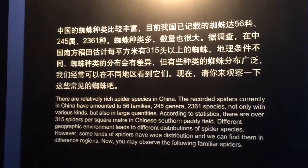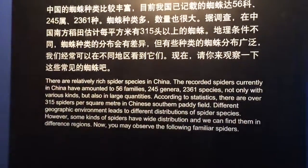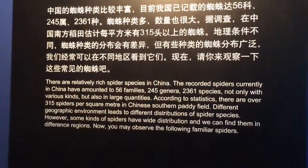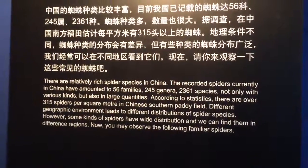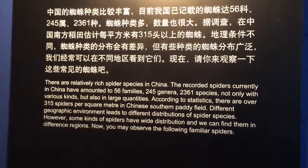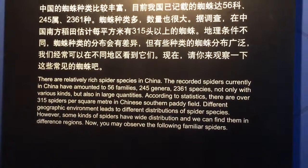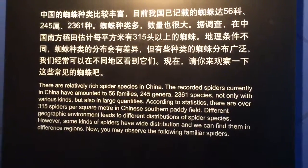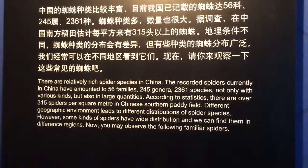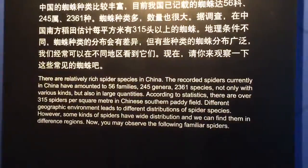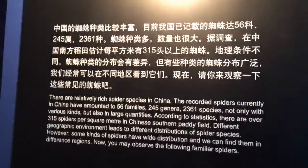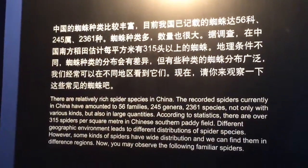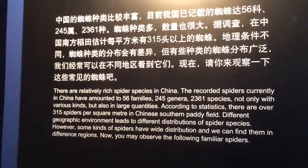Observation corner: China has relatively rich spider species. Recorded spiders currently in China: 56 families, 245 genera, 2,361 species — not only of various kinds but also in large quantity. According to statistics, there are over 315 spiders per square meter in China's southern paddy fields. Different geographic environments lead to different distributions of spider species. However, some kinds of spiders have a wide distribution and can be found in different regions.